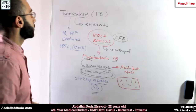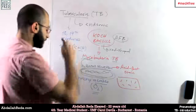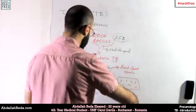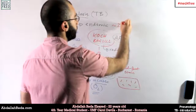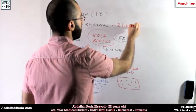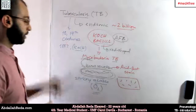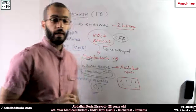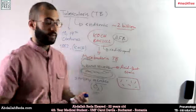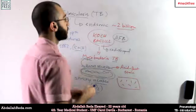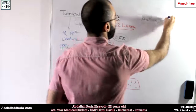Tuberculosis is an infectious contagious disease currently classified as an endemic. It is estimated that around 2 billion people are living with the bacteria of tuberculosis, but that doesn't mean all of them are active cases. Tuberculosis can be active or latent.